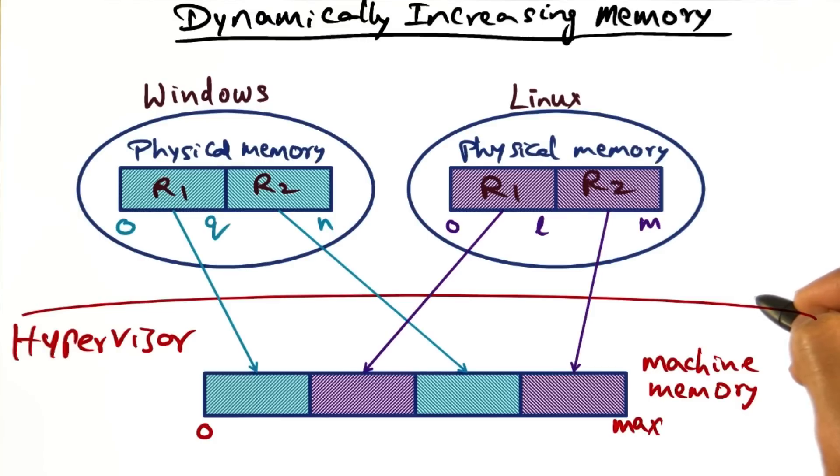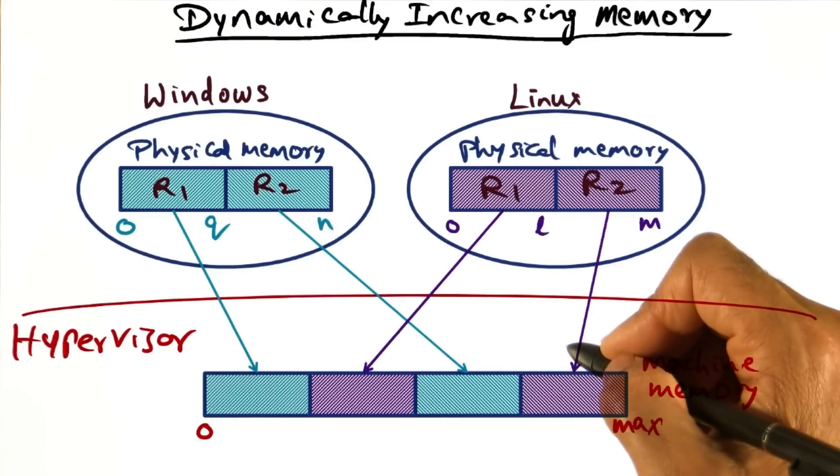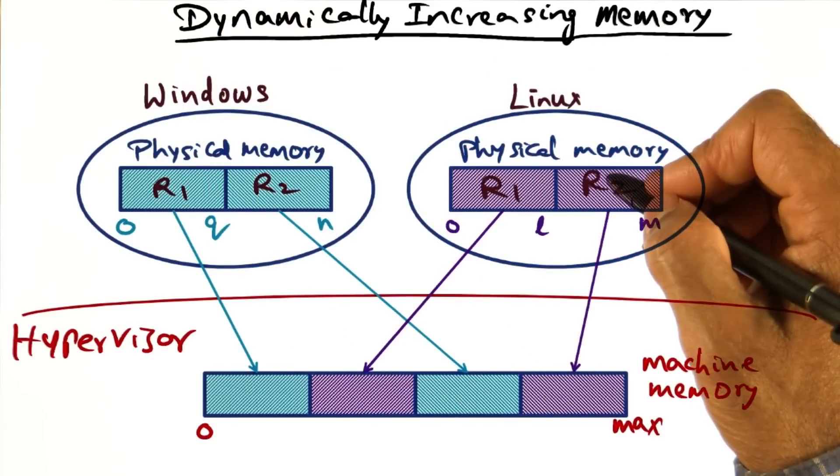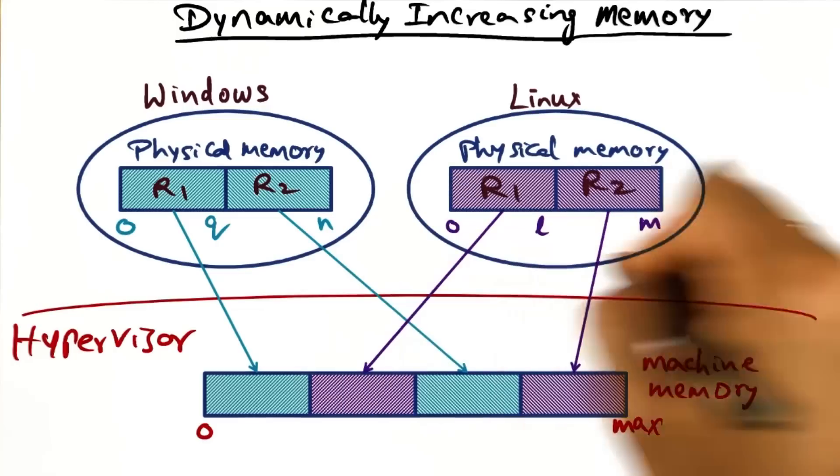As I mentioned, memory requirements tend to be bursty, and therefore the hypervisor has to be able to allocate real physical memory or machine memory on demand to the requesting guest operating systems on top of it.